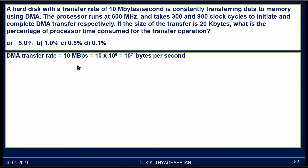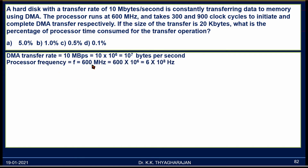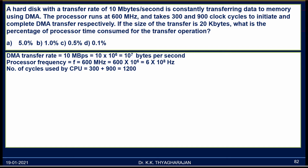First, we will collect all the data given in the problem. The DMA transfer rate is 10 megabytes per second, which is 10 × 10⁶ = 10⁷ bytes per second. The processor frequency is 600 megahertz, equal to 600 × 10⁶ = 6 × 10⁸ Hz. The number of cycles used by the CPU for initiating and completing the DMA transfer are 300 and 900 respectively, giving a total of 1200 clock cycles. The block size is 20 kilobytes = 20 × 10³ = 2 × 10⁴ bytes.